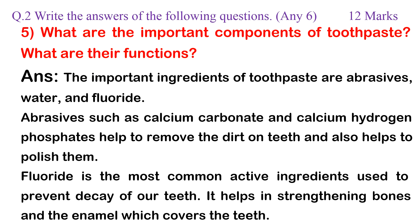Question 5: What are the important components of toothpaste? What are their functions? Answer: The important ingredients of toothpaste are abrasives, water, and fluoride. Abrasives such as calcium carbonate and calcium hydrogen phosphates help to remove the dirt on teeth and also help to polish them. Fluoride is the most common active ingredient used to prevent decay of teeth; it helps in strengthening bones and the enamel which covers the teeth.